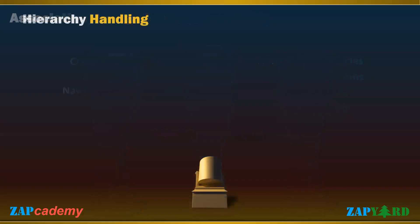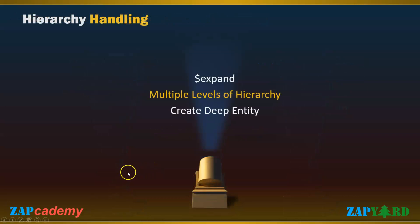Usually in trainings only the happy paths are covered, but at ZAPR we want to provide holistic education. We will learn how to handle data with hierarchy — data with header and item — and also data with deep structures. We will do some hands-on exercises on $expand. We will also cover multiple levels of hierarchy and create deep entities.